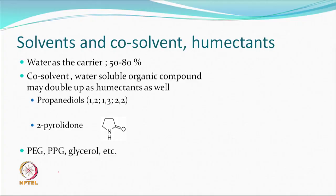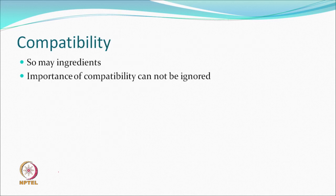For solvents and co-solvents — water is the carrier, forming about 80 percent of the volume. Water-soluble organic co-solvents may also double as humectants, reducing the total number of additives needed. Examples include propane diols, pyrrolidones, polyethylene glycol, polypropylene glycol, and glycerol. When so many chemicals are added, compatibility is critical — one ingredient must not cause coagulation, settling, or breakup of the dispersion.